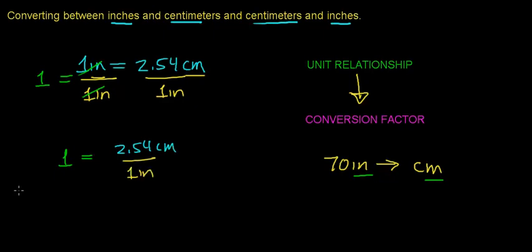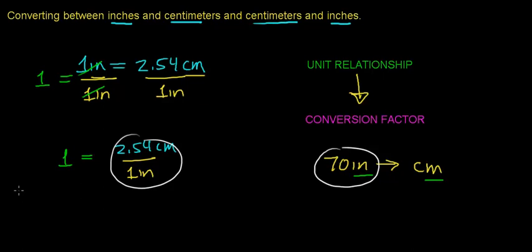Now, in mathematics, the one thing we can do to any number without changing it is multiply it by one. So conversion factors are really equal to the number one. What we can do is multiply the number we want to convert by a conversion factor. That doesn't change the fundamental value of the number — all it does is change the form. So let's take a closer look at how that works.